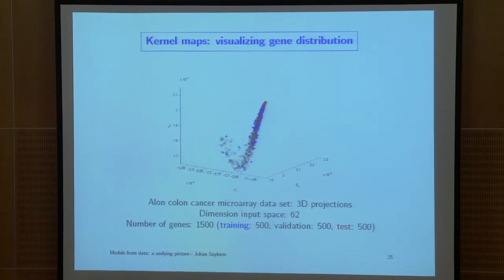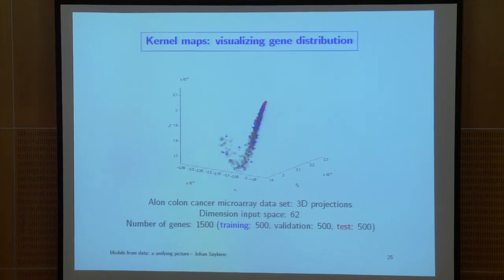Here you see examples on real datasets, visualizing gene distributions. You have training, validation, and test genes, and this gives an optimal data visualization result with out-of-sample extensions. The reference points act like an eye with which you can look at the data and create different representations.